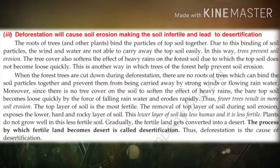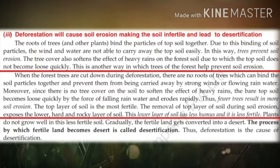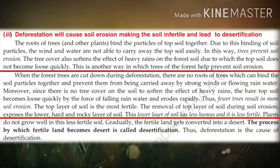But what will happen if the forest trees are cut down? When forest trees are cut down during deforestation, there are no roots of trees which can bind the soil particles together and prevent them from being carried away by strong winds or flowing rain water. Moreover, since there is no tree to soften the effect of heavy rains, the bare top soil will become loose quickly by the force of falling rain water and erodes rapidly. Thus, fewer trees result in more soil erosion.